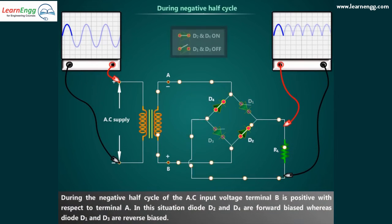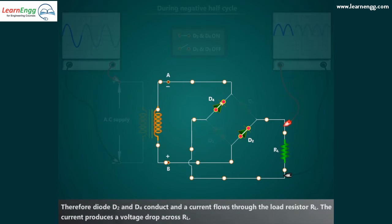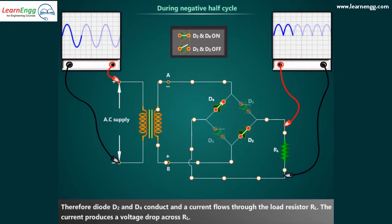During the negative half cycle of the AC input voltage, terminal B is positive with respect to terminal A. In this situation, diodes D2 and D4 are forward biased whereas diodes D1 and D3 are reverse biased. Therefore, diodes D2 and D4 conduct and a current flows through the load resistor RL. The current produces a voltage drop across RL.